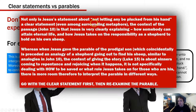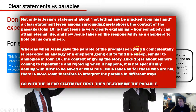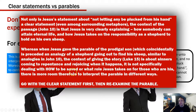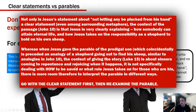Jesus in John 10 is very clearly explaining how someone can attain eternal life and how he takes on the responsibility as a shepherd for his sheep. The context of the prodigal son parable in Luke 15 is about sinners coming to repentance and rejoicing when it happens — it's not specifically dealing with how to be saved or the role Jesus takes on for those who are his. With the parable there's more room for interpretation, so go with the clear statement first and re-examine what you believe about the parable.